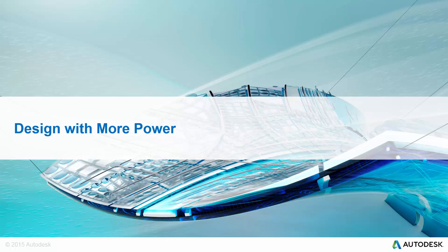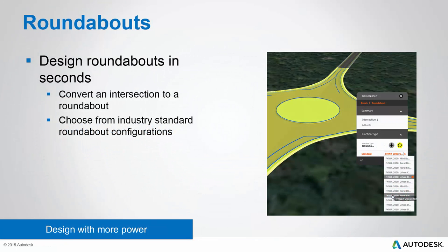Next, let's talk about how we're allowing you to design with more power in this summer 2015 update. The first feature is huge news for InfraWorks 360: you can now create roundabouts in your InfraWorks 360 models, and not only that, you can do it in literally seconds. You can click an intersection, change it to a roundabout, choose from a list of industry standard roundabout configurations, and the software will design the roundabout for you. It really couldn't be any easier — our commitment to giving you more tools to design with more power in InfraWorks 360.